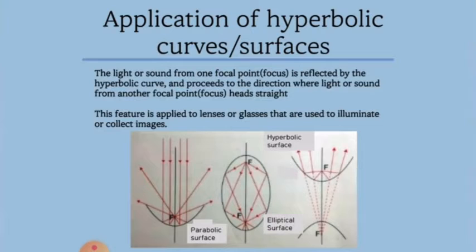The light or sound from one focal point is reflected by the hyperbolic curve and proceeds to the direction where light or sound from another focal point heads straight. This feature is applied to lenses or glasses that are used to illuminate or collect images.